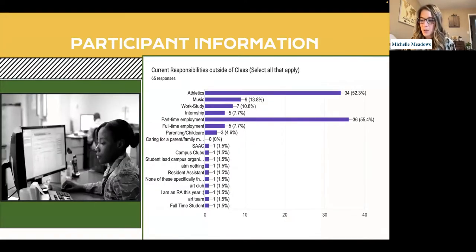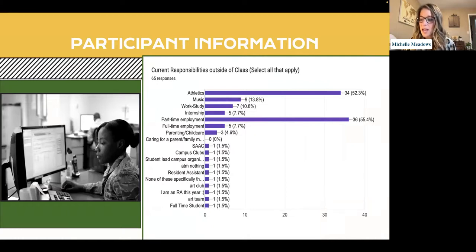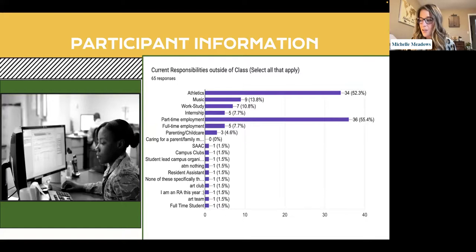Our students were undergraduate students in counseling and general education classes, mostly juniors and seniors, with seven sophomores — a total of 65 or 66 students, with one not responding to the first survey. When asked about their responsibilities outside of class, over half expressed they are either working part-time or are in athletics. This reiterated why flexibility is so important for our student population and why we're doing this type of pilot program.